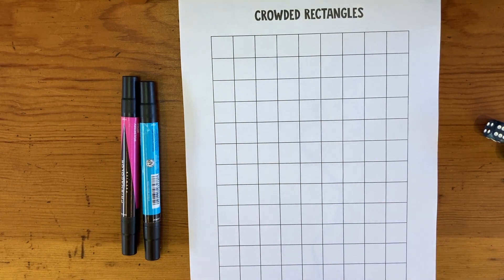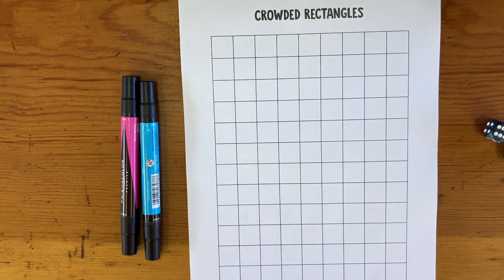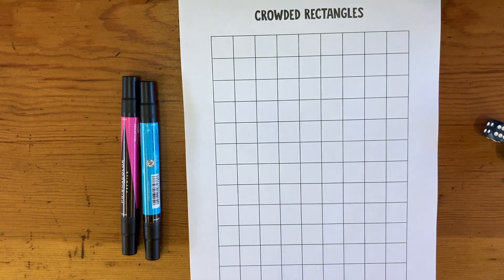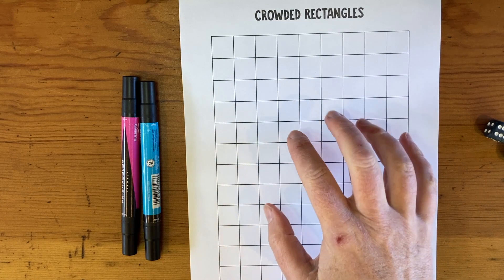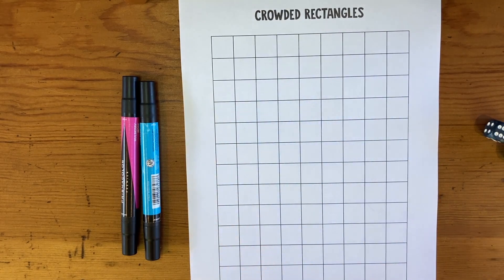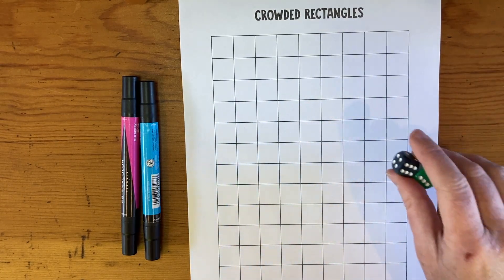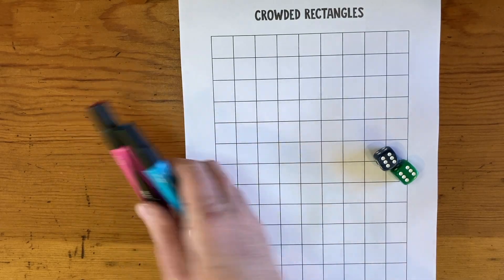I'm going to show you how to play Crowded Rectangles. This is a two-player game and you will need one printed game board that looks like this, it's just basically a big square grid. You need two dice and two different colored markers.